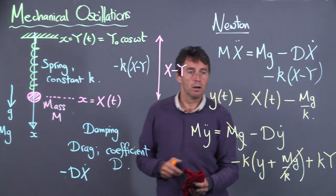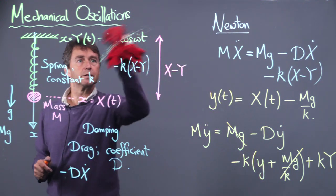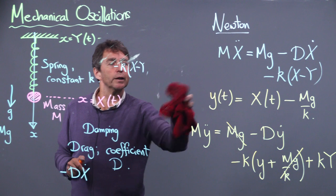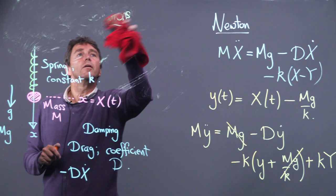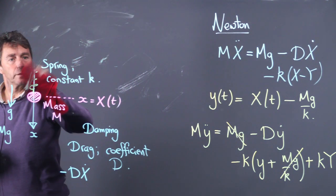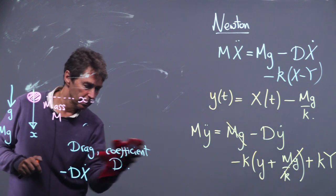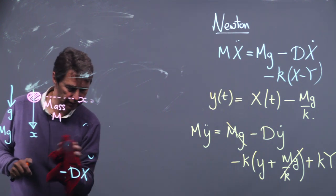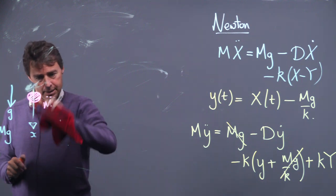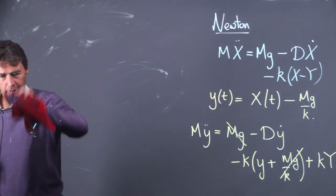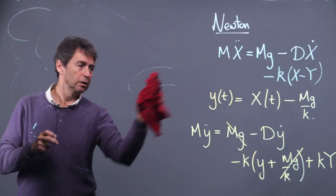Next, divide by m and rename the coefficients. Calling d/m = 2γ and k/m = Ω², and the forcing amplitude a = kY₀/m, the equation takes a recognizable form: a second-order constant-coefficient linear inhomogeneous ODE. We know exactly how to solve it by splitting into homogeneous and particular solutions.